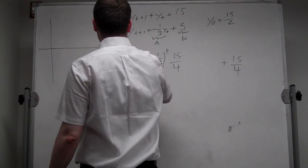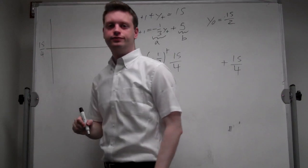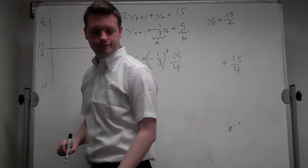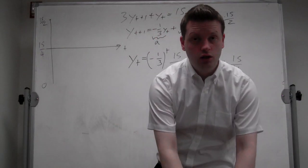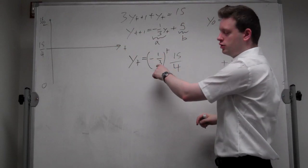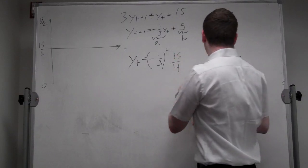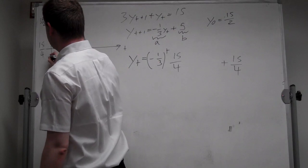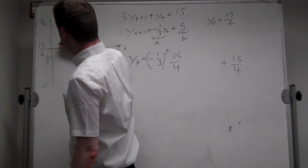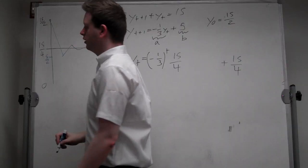Let's draw this with the t-axis here and the steady state at 15 over 4. Our initial starting point is 15 over 2, and down here is 0. We start up at 15 over 2. After one period, we get minus 1/3 times 15 over 4 — which is minus 5 over 4 — plus 15 over 4, which equals 5 over 2. So after one period, we're here. The next period, we cross the steady state again and again, converging with oscillation until it converges.